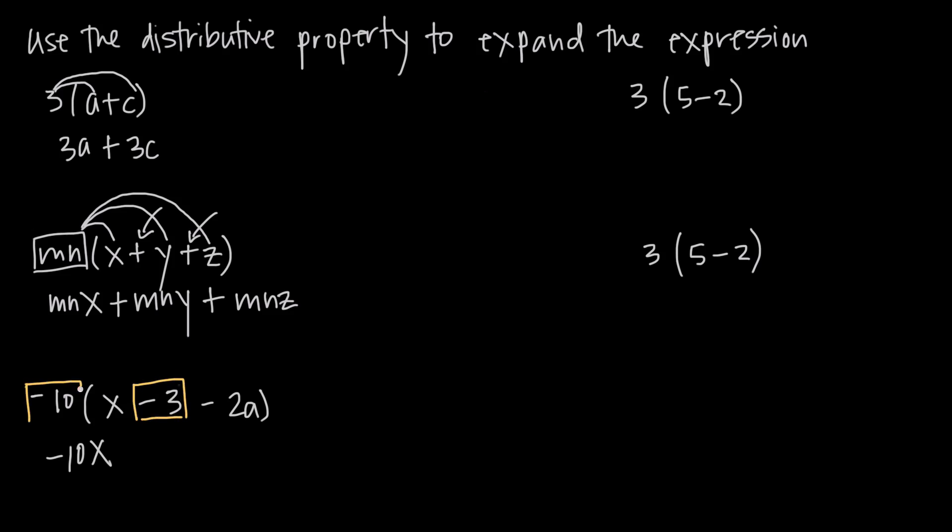We have negative 10 times negative 3. A negative times a negative is a positive, so we're going to get plus 30 because those negatives cancel, and 10 times 3 is 30. Same thing here with negative 2a. We'll multiply negative 10 by negative 2a. Our negatives will cancel and we'll get a positive 20a.